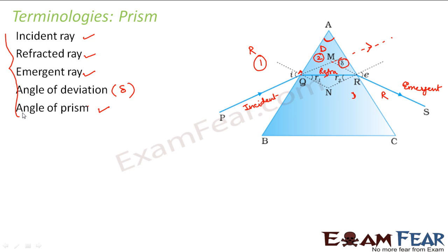So in prism, there is always an incident ray, a refracted ray and an emergent ray. The angle which the emergent ray makes with the incident ray is known as the angle of deviation and every prism has an angle of prism which is characteristic of itself.